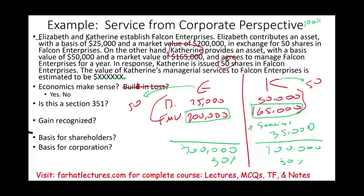Does the economics make sense? Yes — $200,000 at 50%, $200,000 at 50%. Is there a built-in loss? No. Is this a Section 351 transaction? Yes, because Catherine contributed both services and property, and the property contributed ($165,000) is more than 10% of the services ($35,000 × 10% = $3,500). Therefore Catherine is counted as part of Section 351. Together Elizabeth and Catherine control 100%, which exceeds the 80% control requirement.